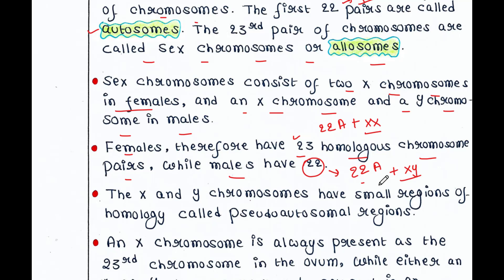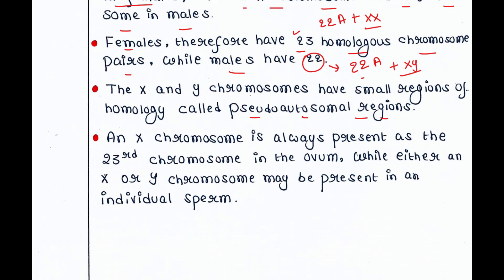The X and Y chromosomes have small regions of homology called pseudoautosomal regions. Very small regions of the X and Y chromosomes are the same — they share homology — and that particular region is called the pseudoautosomal region.